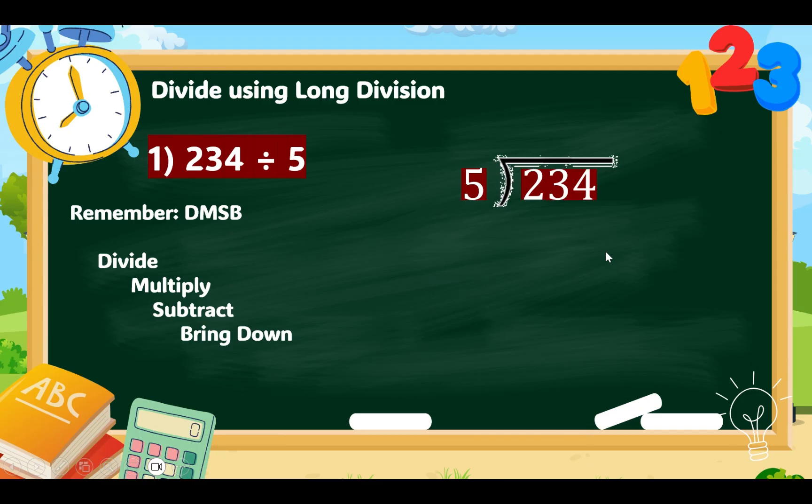Now, 234 of our dividend is written inside the division house. Our divisor 5 is written outside the division house. Now, to divide, let's start with the highest place value. So, we have ones, tens, hundreds. The number that has the highest place value is 2. So, 2 divided by 5 cannot be divided. So, it can't be. We have to regroup. And we use 23 instead. 23 divided by 5 equals 4.